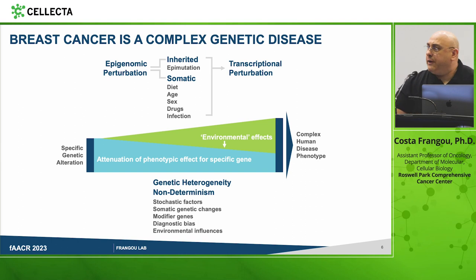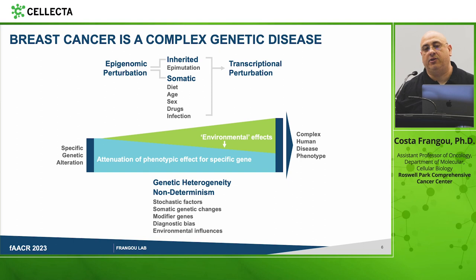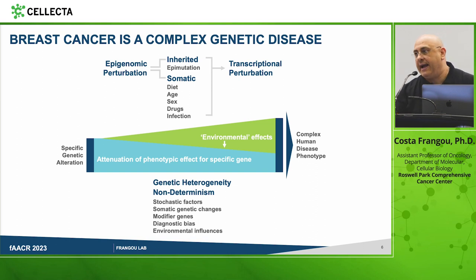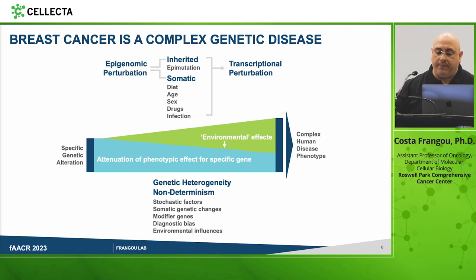That includes immune cells, stromal cells, endothelial cells, and so forth. We now appreciate that breast cancer is an extremely complex genomic disease — really a collection of different diseases — with variable genetic, molecular, spatial, temporal, and environmental underpinnings that modulate not only therapeutic responses but long-term patient survival.